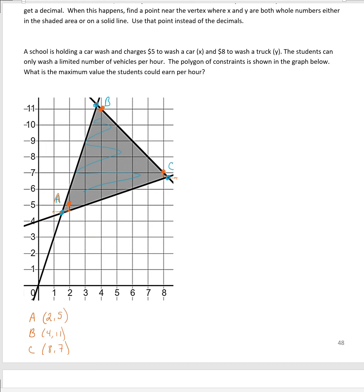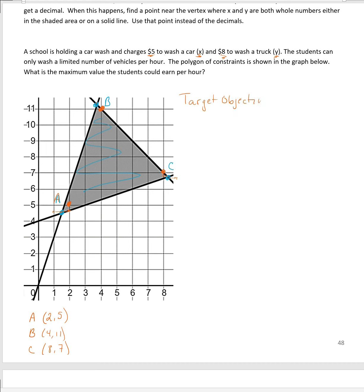A school is holding a car wash. It charges $5 to wash each car — that's X — and $8 to wash each truck — that's Y. The students can only wash a limited number of vehicles per hour, and the polygon of constraints is already shown on the graph. We want the maximum value the students can earn, so our target objective is to maximize value. Our optimizing function will let us calculate it.